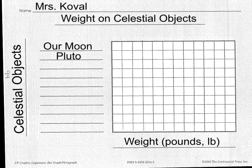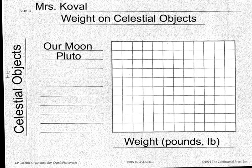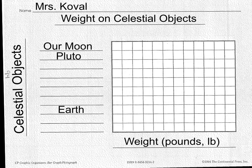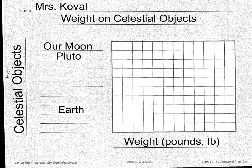So what we're going to do is graph the weight of a hundred pound person on Earth, making a bar graph. We're going to graph Earth first. I've added Earth to our graph — you should have included the two planets before Earth and the five planets after Earth. I'm going to make a bar graph and make it bright blue.